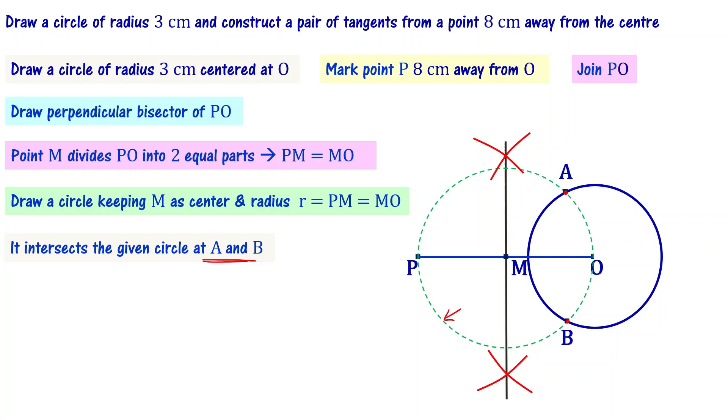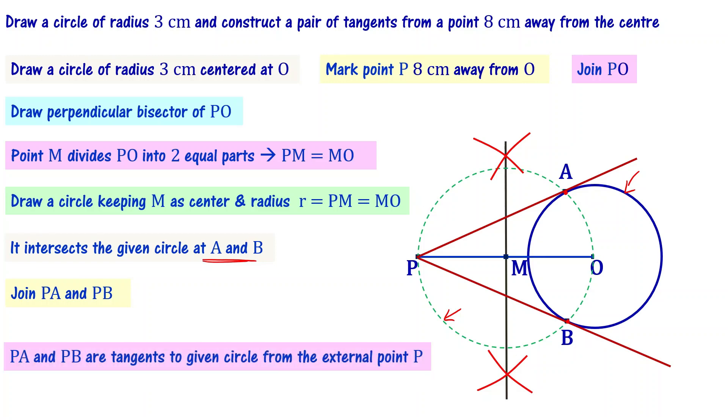This circle is intersecting with the original circle. Now let me connect A and P. Connecting A and P, I have a tangent now that is called AP or PA. And connecting P and B, I have another tangent that is PB. So PA and PB are the tangents to the given circle from the external point P.